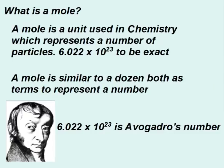So what exactly is a mole? A mole is a unit used in chemistry which represents a particular number of particles, 6.022 times 10 to the 23rd to be exact. A mole is similar to a dozen because both terms represent a number. A dozen eggs is 12 eggs. Well, a mole of eggs would be 6.022 times 10 to the 23rd eggs, so a whole lot of eggs. We refer to 6.022 times 10 to the 23rd as Avogadro's number. And that's a picture of Avogadro.